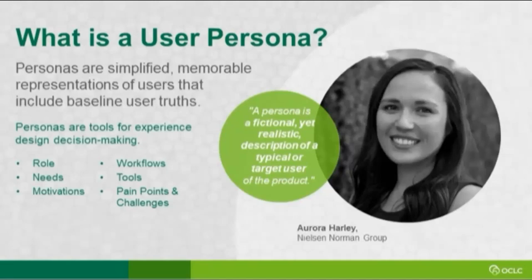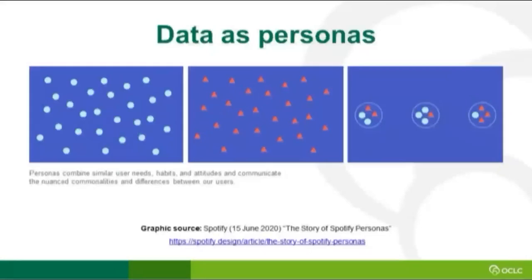Taking all of that information and making it available to everybody working on that product is important. We want to make sure it's a baseline tool so when we're talking about, say, our circulation librarian or reference desk person, we're all talking about that same person - we all have that same person in mind. You're probably wondering, okay, you gathered data, worked with secondary resources, interviews, and observations - how do you pull it together?